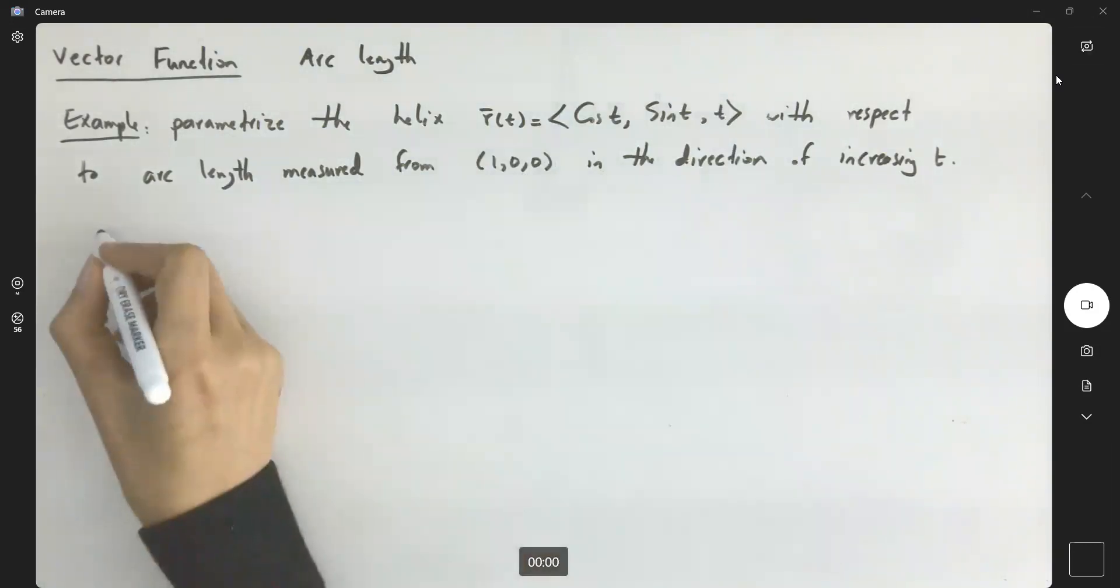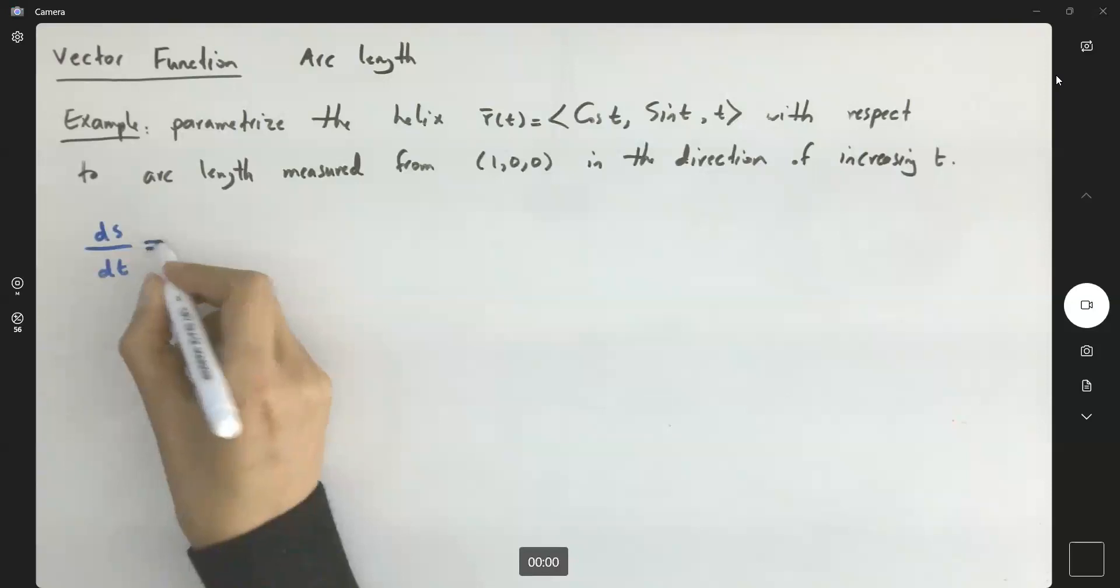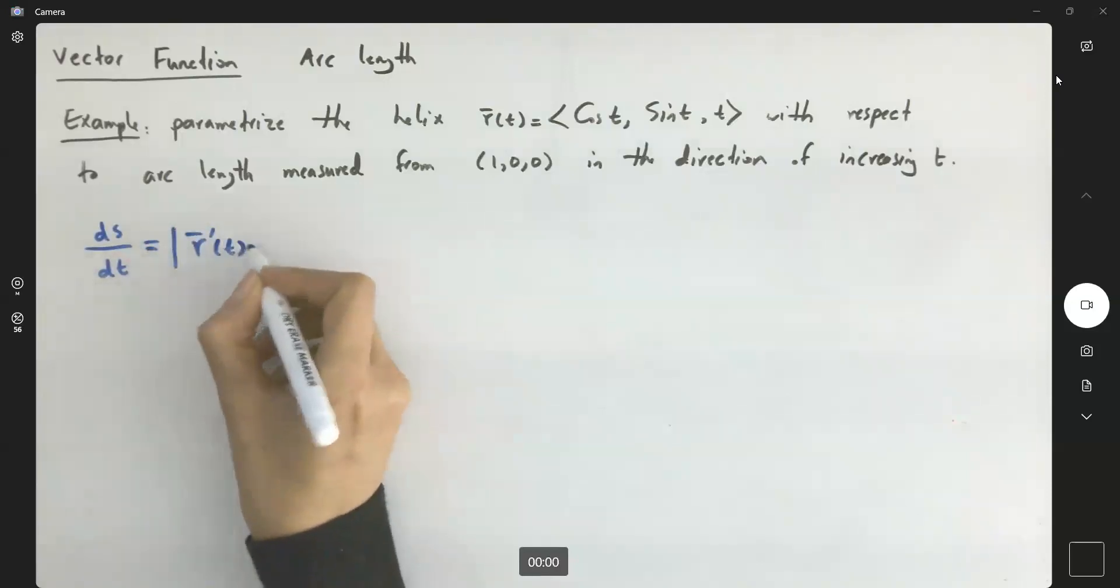First, recall that ds/dt, or the rate of change of s with respect to t, is nothing but the norm of the derivative of r.